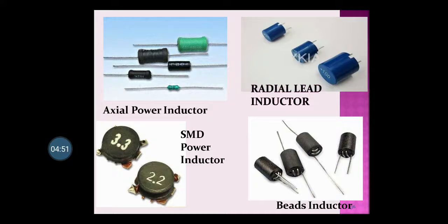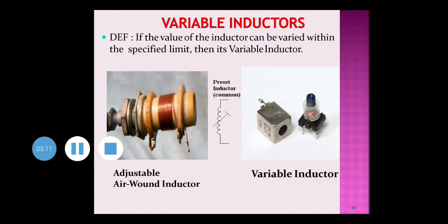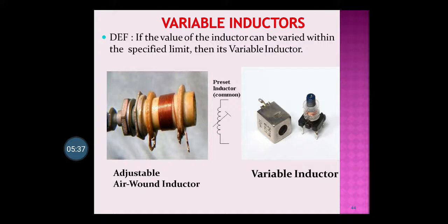These are different inductors — axial power inductors. They look like a resistor, but you can see there are color bands on the lower inductor. It is not a resistor; it is an inductor. Then there are assembly power inductors and bead inductors. The other category is variable inductors — these are inductors whose value can be changed. If you want a different value in the circuit, you can change it, and that is called a variable inductor. Its symbol is also shown here as a preset inductor.